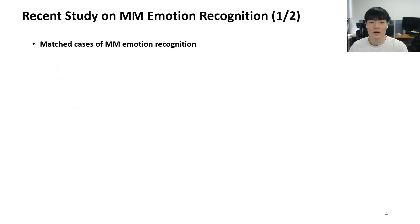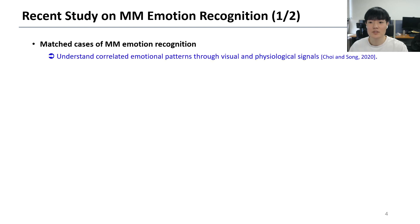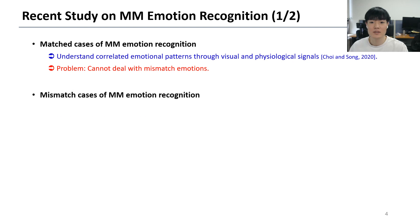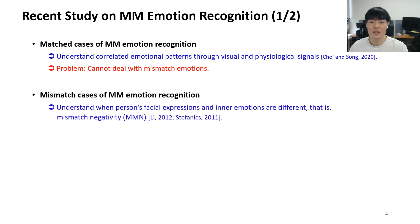There are two directions for multimodal emotion recognition. First, understand correlated emotional patterns through visual and physiological signals, but it cannot deal with mismatched emotions. Second, understand when a person's facial expressions and inner emotions are different, i.e., mismatched negativity.